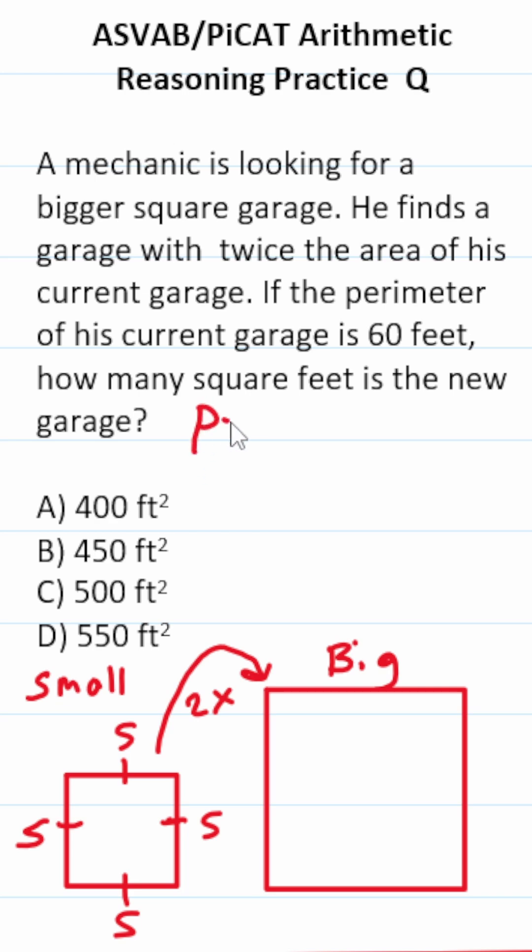We're talking about finding the perimeter as well as the area of squares. To find the perimeter of a square, it's four times its side length. To find the area of a square, it's its side length squared.